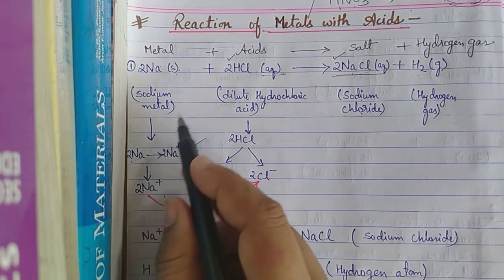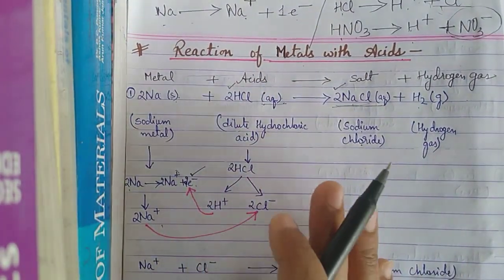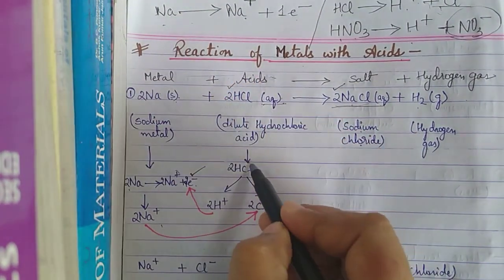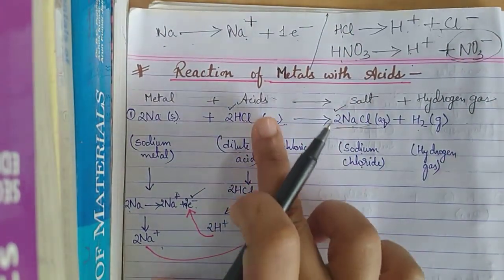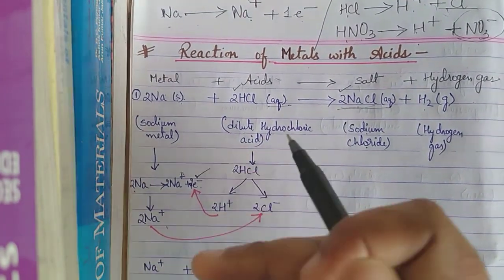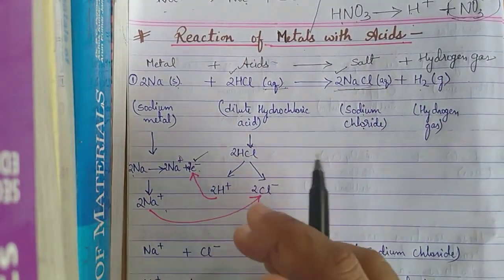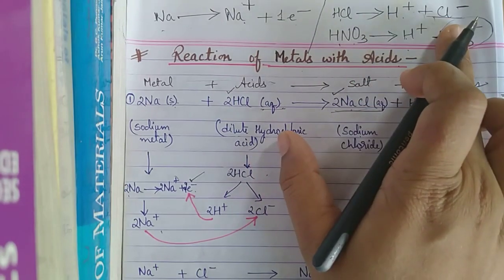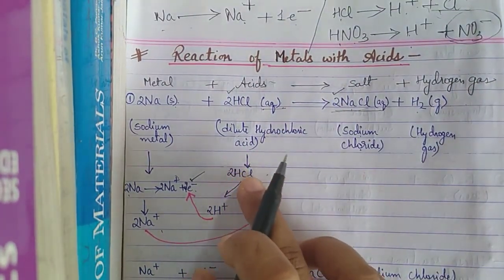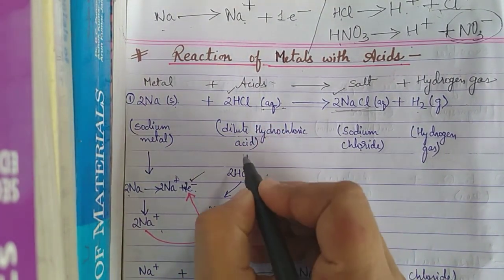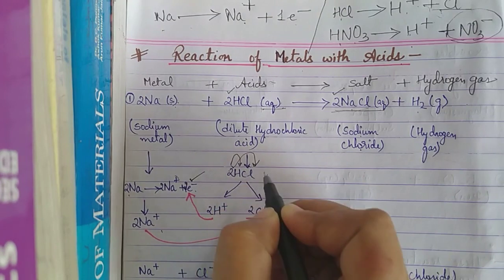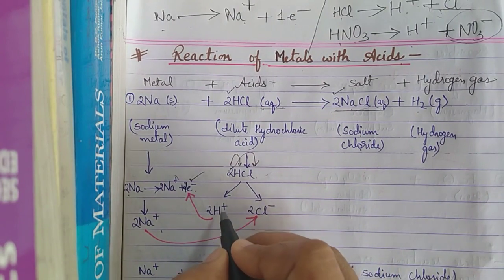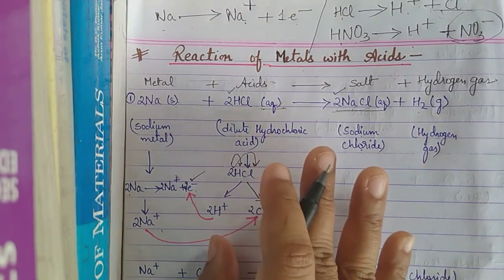So sodium forms Na⁺ ions due to its electropositive nature. Now for the acid side: HCl when added to water forms H⁺ and Cl⁻ ions. Since there are two molecules of HCl, it gives two H⁺ ions and two Cl⁻ ions.